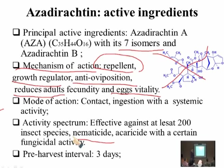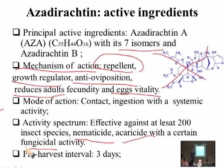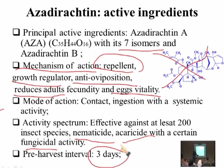Azadirachtin reduces adult fecundity — insects feeding on neem-treated plants produce fewer eggs, going from 200 eggs down to 5 or even none. Even eggs that are laid are non-viable — they don't hatch and are dead, because it reduces egg viability. Pre-harvest interval is three days, making it very efficient as a natural product.